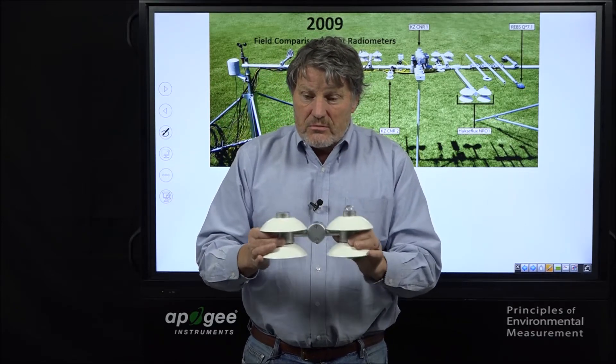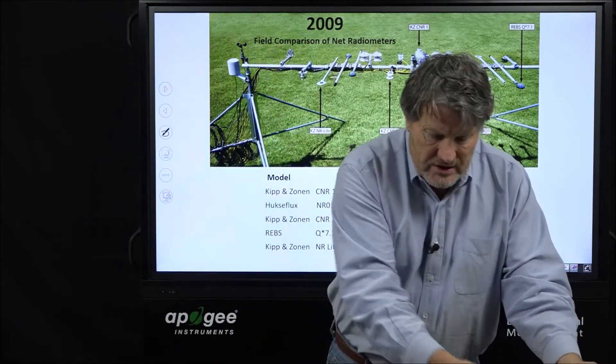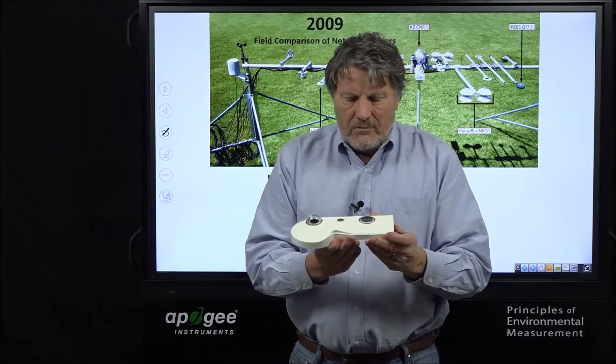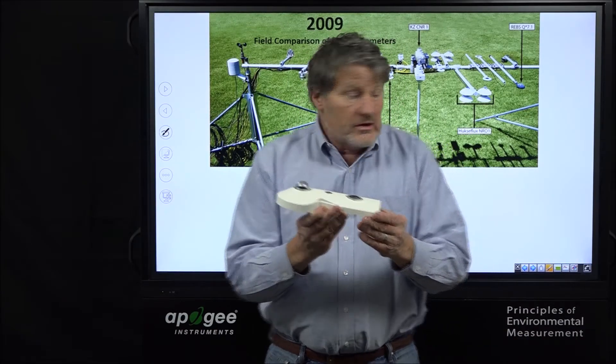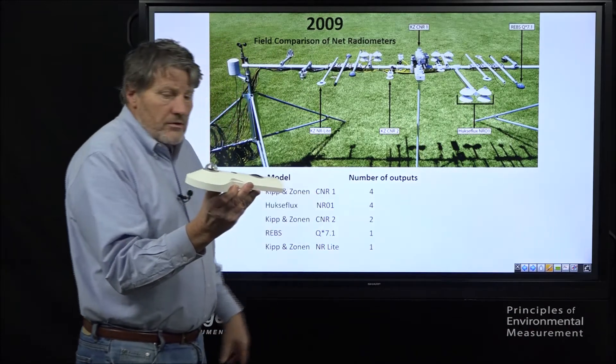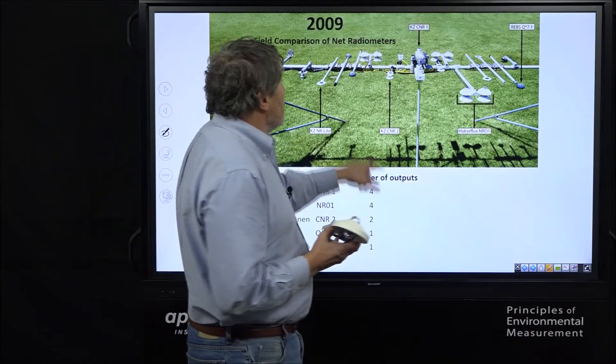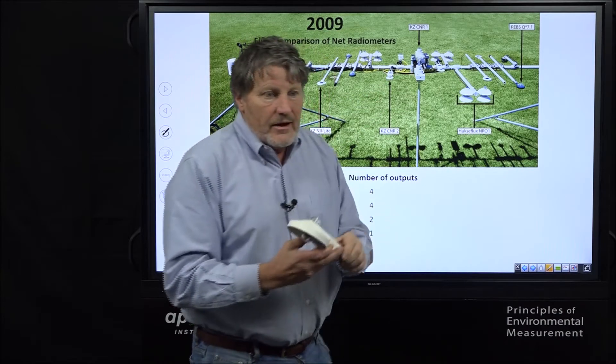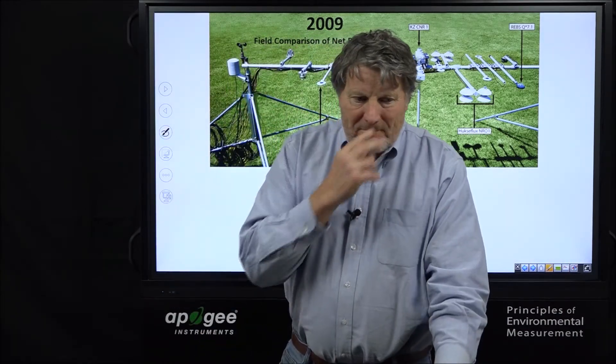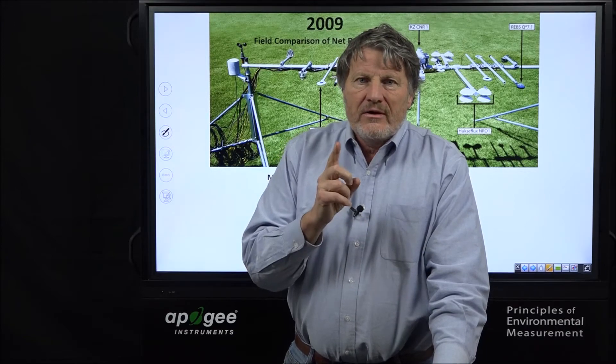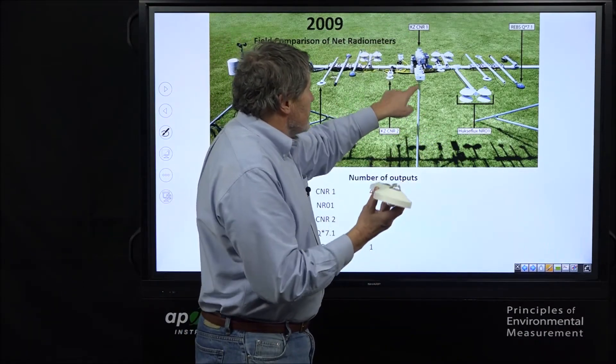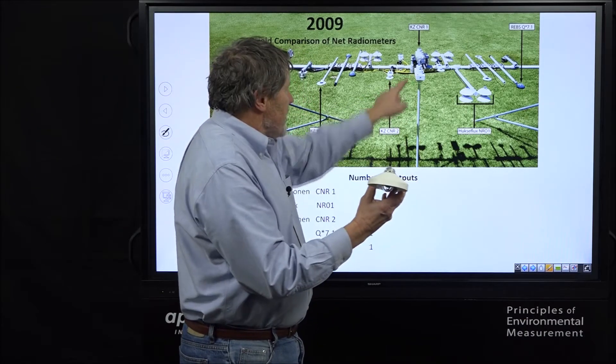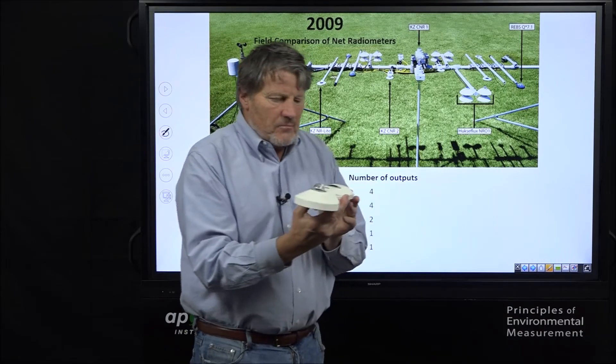This is a considerable step up from these other instruments. And then finally, the most expensive instrument of all is this Kippenzonen CNR1, which is shown in our pictures. Oh, we've got the CNR1 in this study. The CNR1 is the predecessor to this. That's a big, heavy instrument right here. This came out after this study. It's a similar instrument, same company. It's a slight upgrade from that.